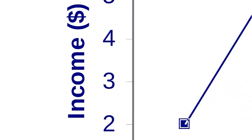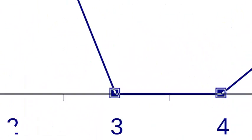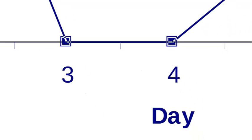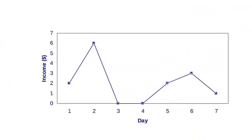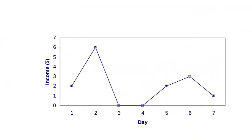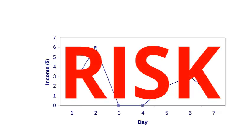A person could earn $2 today, $6 tomorrow, and nothing for the next two days. When you have a small and unstable income, you are more vulnerable to risk.